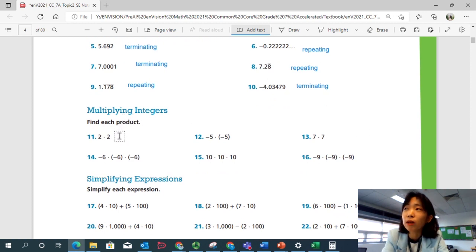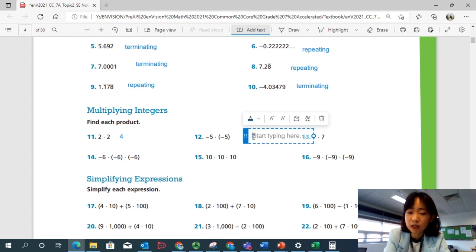So 2 times 2 is positive 4. What is negative 5 times negative 5? If you multiply negative by a negative, you should get a positive. The negatives cancel out. So negative 5 times negative 5 is a positive 5 times 5, 25.